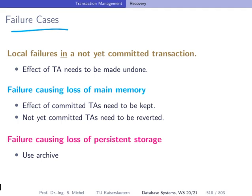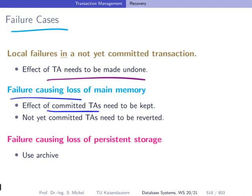This brings us to three overall failure cases. We have local failures in not-yet-committed transactions — the effect of committed transactions must be kept persistently, and the effect of not-yet-committed transactions must be reverted, meaning they have to be made undone. The third case is failure causing loss of persistent storage — in this case we have to use an archive.